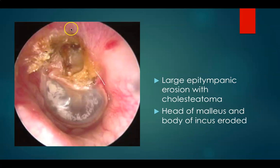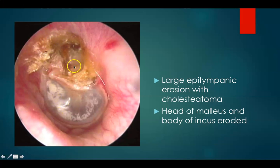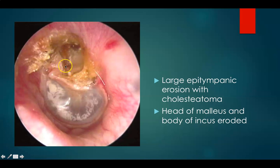Here you can see a large epitympanic erosion with cholesteatoma. This is again the left ear. This is your anterior and posterior part. The pars flaccida is retracted, the scutum is eroded, and you can see cholesteatoma. The head of malleus and body of incus are eroded.